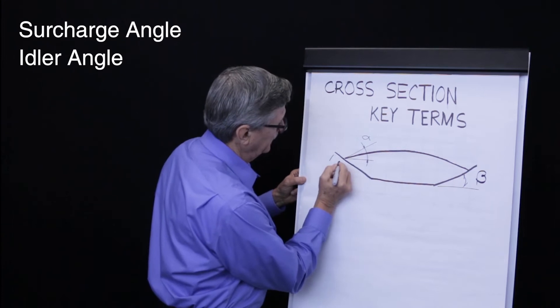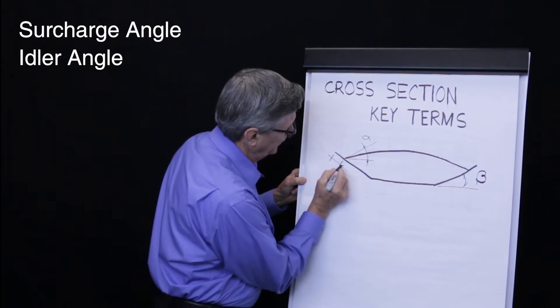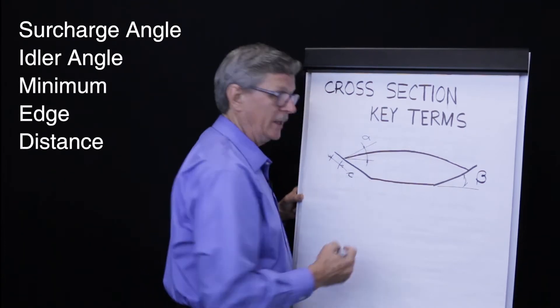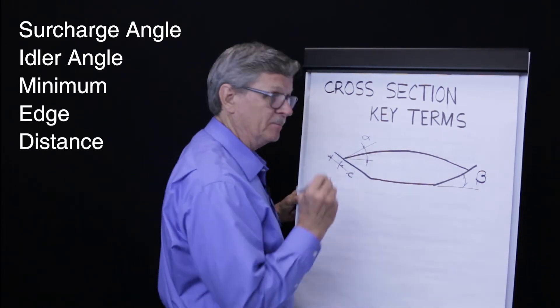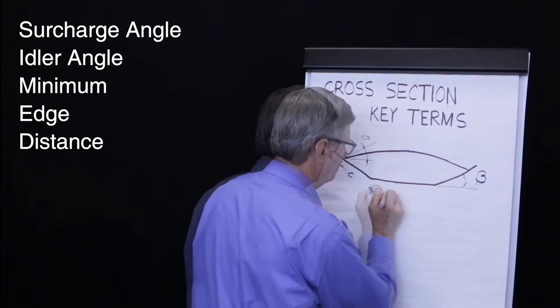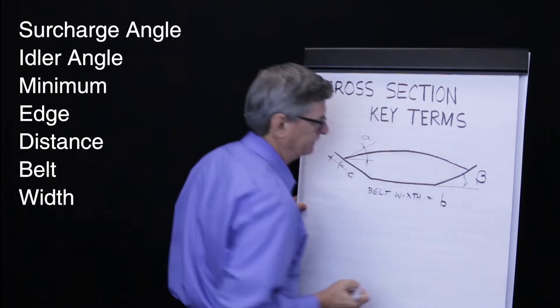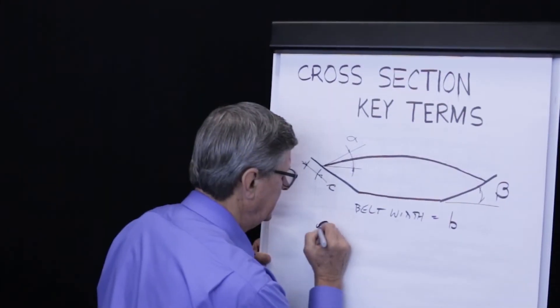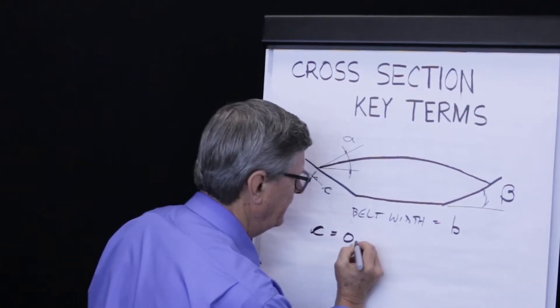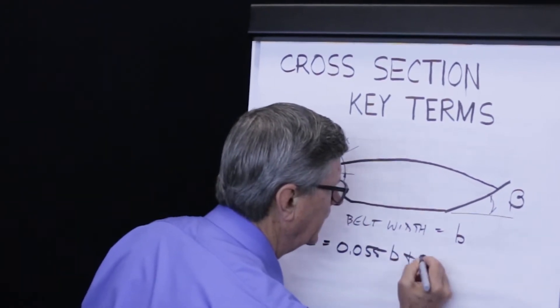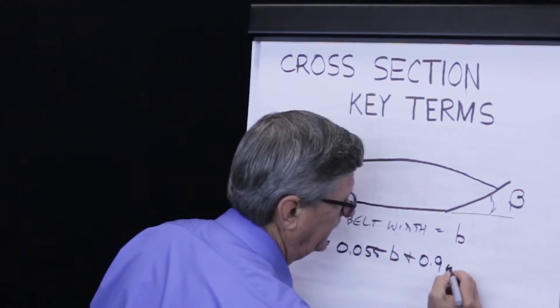We look at a very important parameter here, C, which CEMA defines as minimum edge distance. Belt width, we define as B. C equals 0.055 times B plus 9 tenths of an inch.